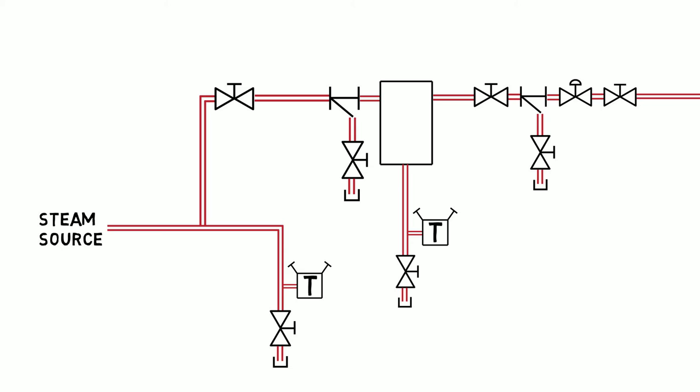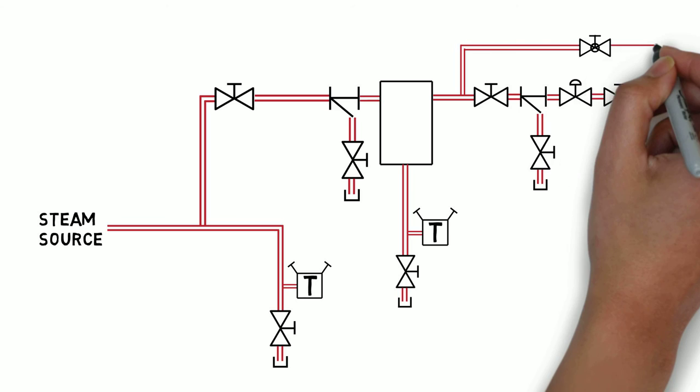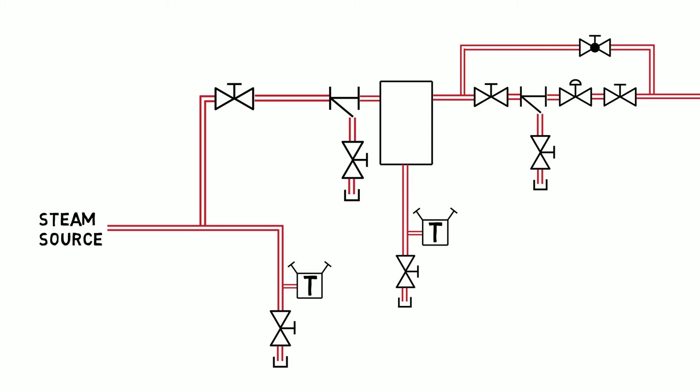If a bypass valve is installed in parallel with the control valve, the process can be operated manually to ensure no downtime while the control valve is serviced.